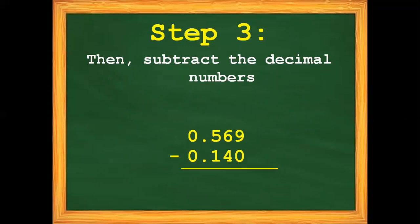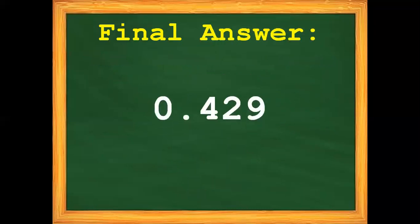In this case, we need to add 0 to our subtrahend. Let's proceed to step number 3: subtract the decimal numbers. We have 569 thousandths minus 140 thousandths. 9 minus 0 is 9. 6 minus 4 is 2. 5 minus 1 is 4. Write the decimal point, and 0 minus 0 gives us 0. So the final answer is 429 thousandths.